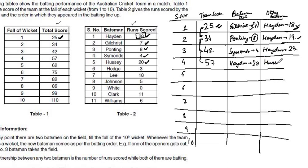Hussey scored the other 10 runs. The next wicket fell at the score of 62, a difference of 5. Hussey scored a total of 20 runs, so Hussey cannot be the person out at 62. It means the next person is Hodge. Hodge scored 3 runs. With the difference of 5, the other 2 runs were scored by Hussey, giving Hussey 10 plus 2 = 12 runs so far.